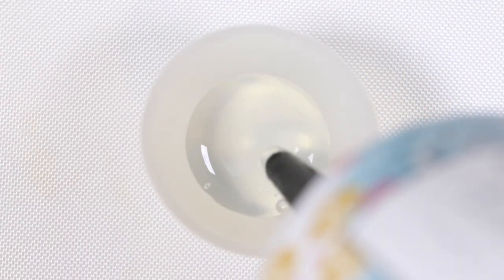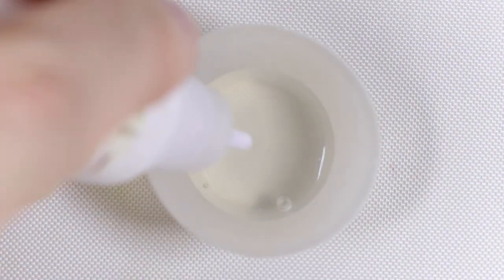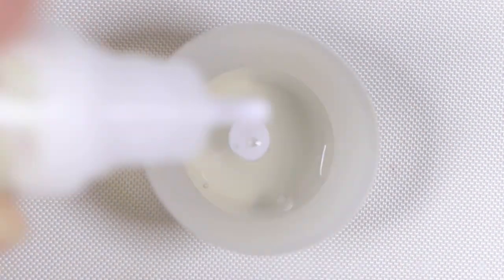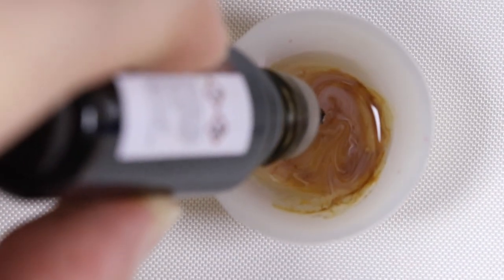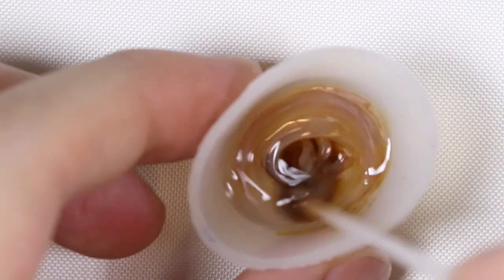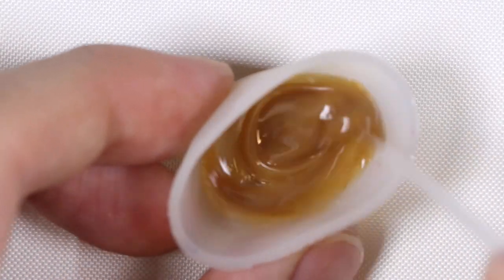Then to make the caramel, I'm going to add some UV resin along with some white dye pigment. And then I added a little bit of brown until I got the nice caramel color. And I was really happy with the color because I thought it looked like caramel to me.